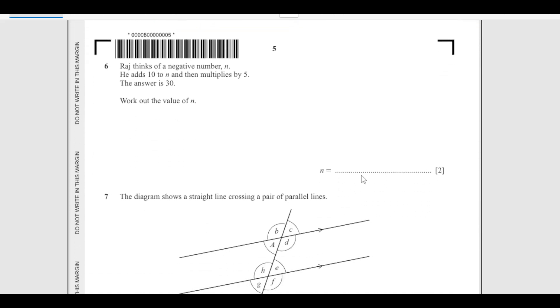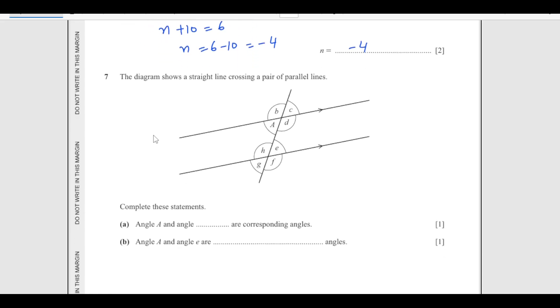Number 6: Raj thinks of a negative number N. He adds 10 to N and then multiplies by 5. Answer is 30. So he thinks of N, adds 10, and then multiply this by 5, and the answer is 30. We can simplify now: divide both sides by 5, so we got N plus 10 equals 6. And N is 6 minus 10, that is negative 4.